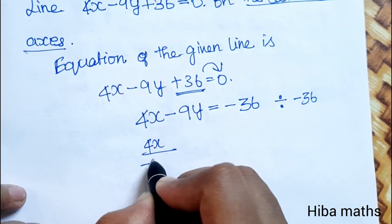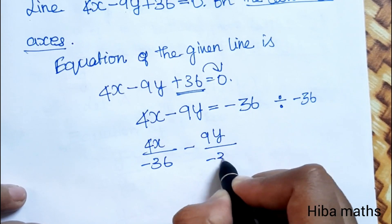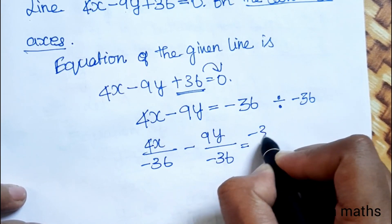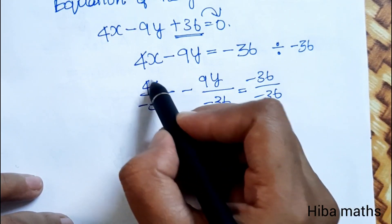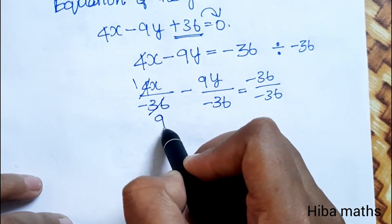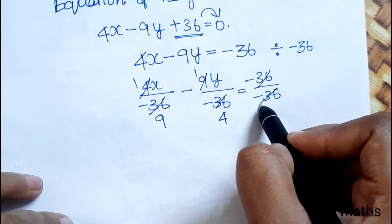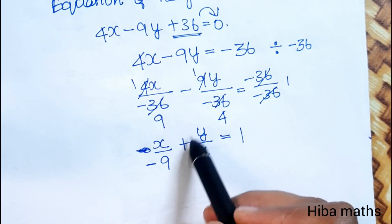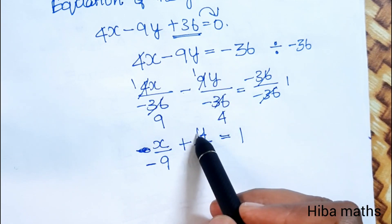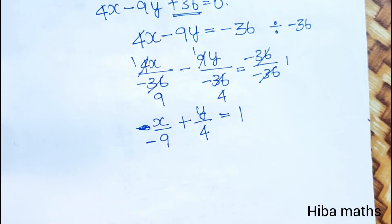4x divided by minus 36, minus 9y divided by minus 36, equals minus 36 divided by minus 36. Simplifying: x by minus 9 plus y by 4 equals 1. The value below x is a, and the value below y is b.